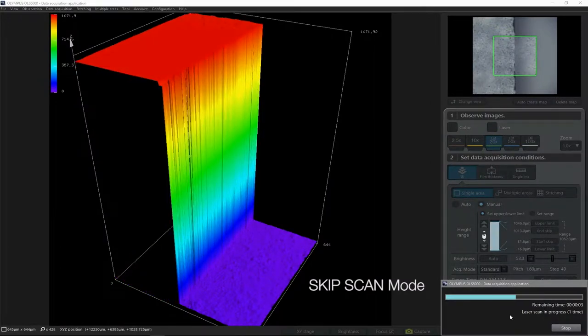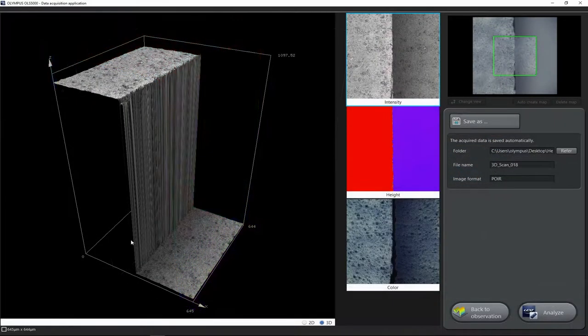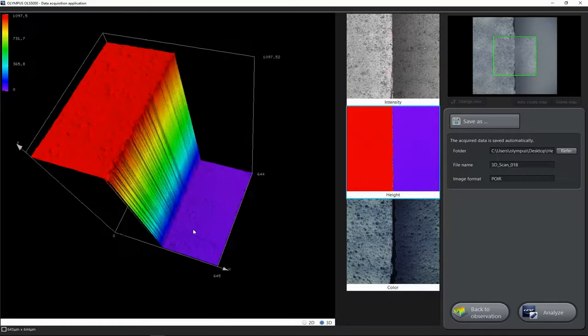For even faster results, the new skip scan mode enables the system to measure a 1 millimeter step height difference in 20 seconds.